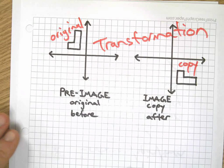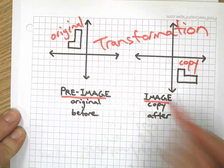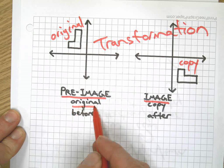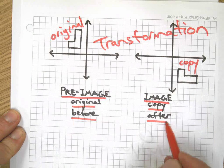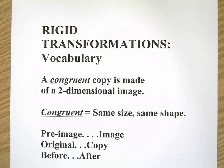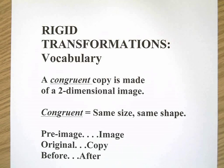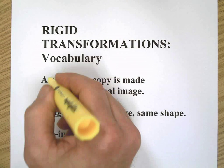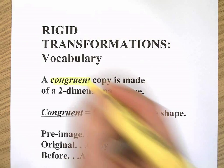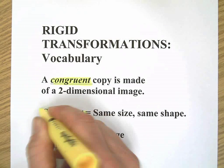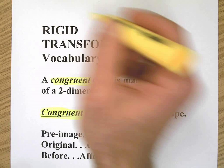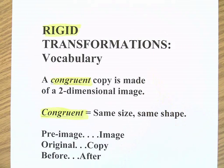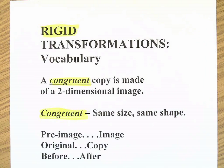It's usually called a pre-image and an image, but you might also see original, copy, before, after, et cetera. Congruent, as you remember from previous years, congruent just means same size, same shape. So you could see that rigid. There are other types of transformations, but we're talking rigid transformations, ones that use congruent shapes.